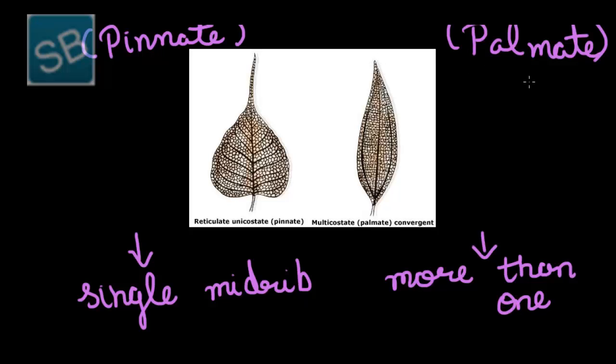Multicostate venation can be either converging or diverging. These veins transport food, water, soluble minerals, and salts. They also form a skeletal network of lamina.